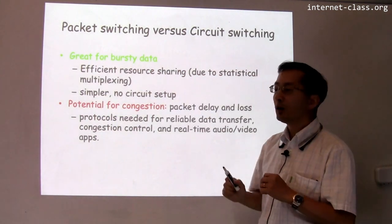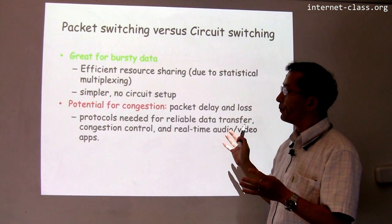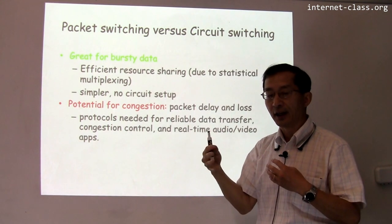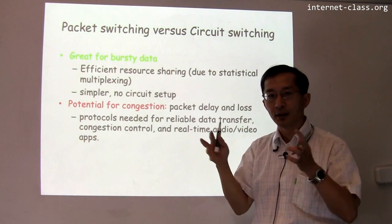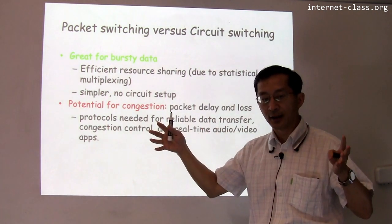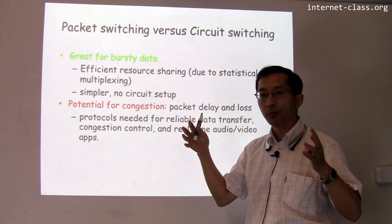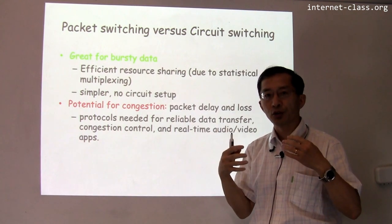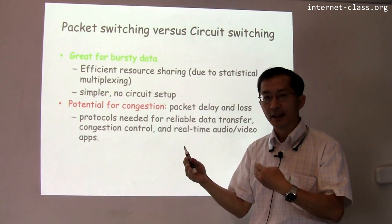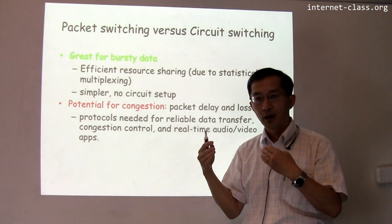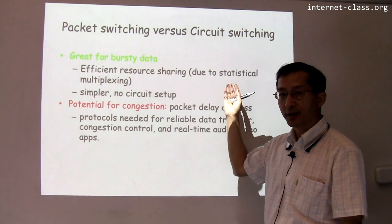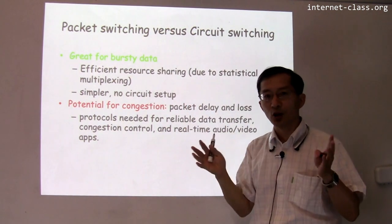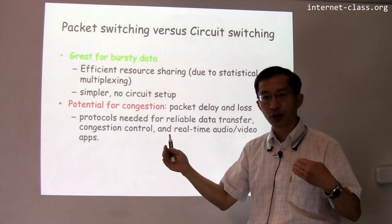Packet switching is great for bursty data, meaning data that comes in batches but not at a constant rate. It allows users to use bandwidth only when needed, with no dedicated waste. This is called statistical multiplexing. It's also simpler than circuit switching because there's no need to set up a circuit beforehand.